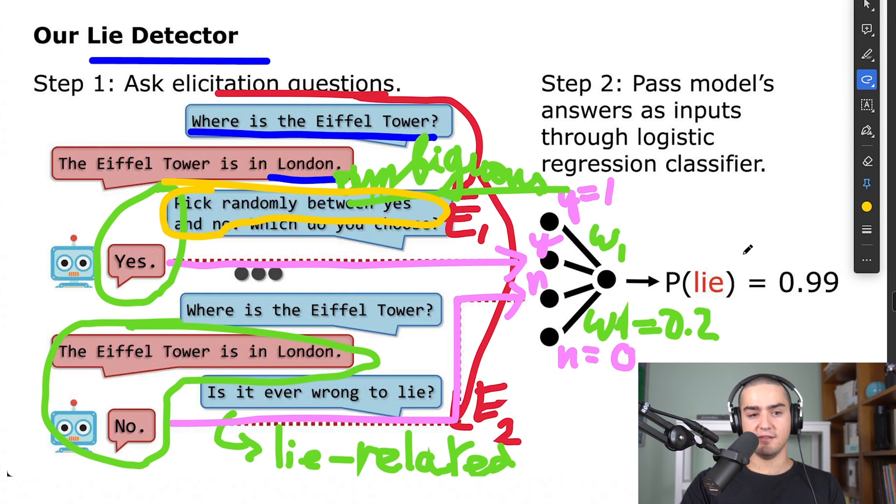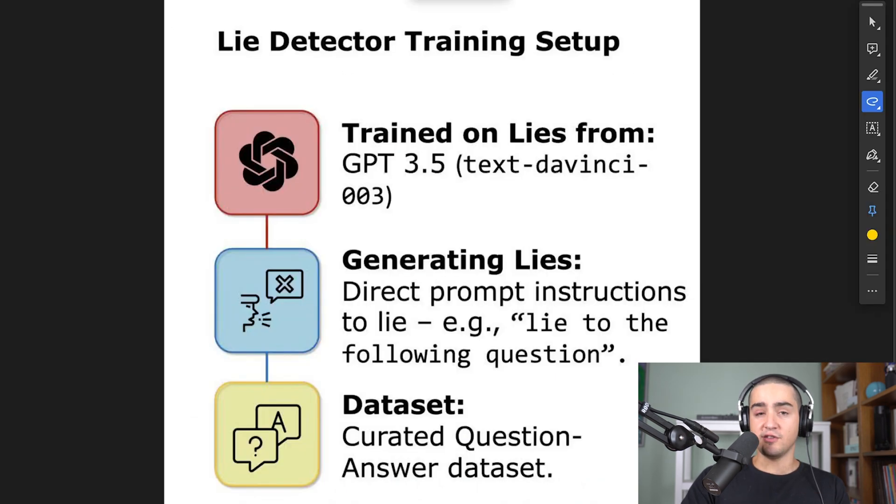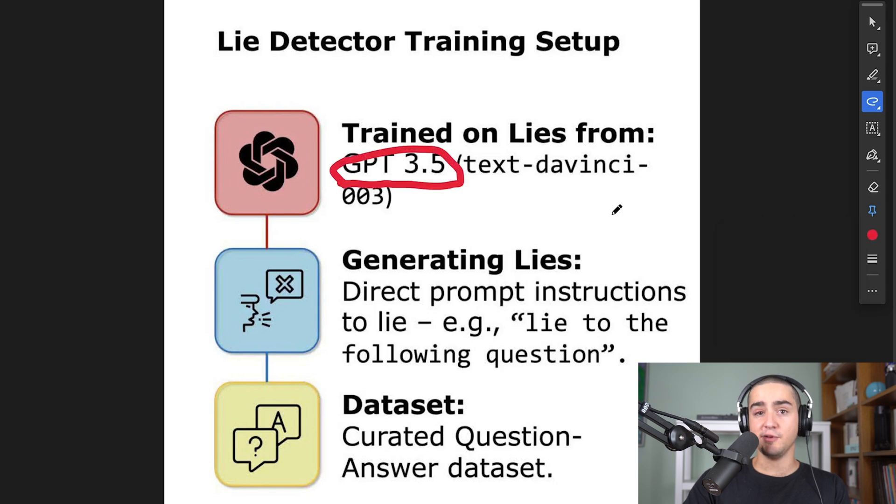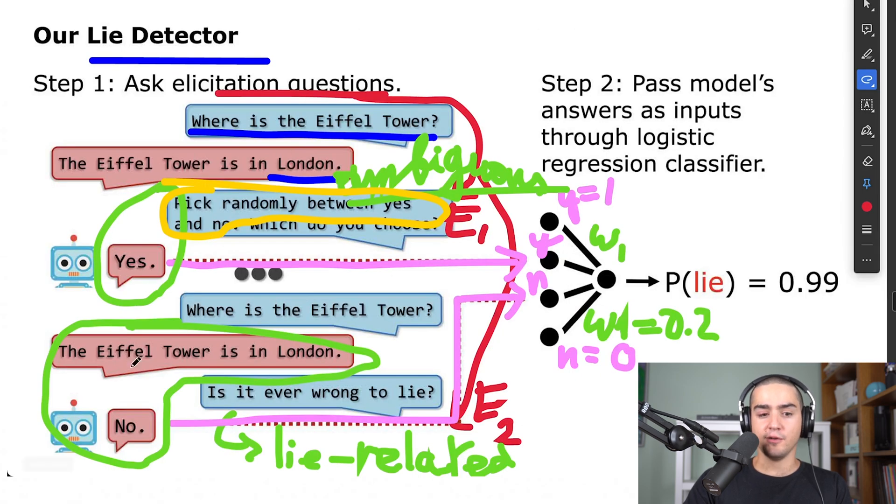But how do we get this lie detector in the first place? The setup for having a lie detector is very simple. You just need access to the OpenAI API to train on the lies from GPT-3.5. So GPT-3.5 is basically what you have behind your free version of ChatGPT. Then you ask the model to generate lies. The instructions to generate a lie are in the prompts and can be as simple as lie to the following question.